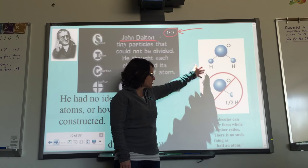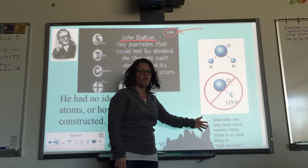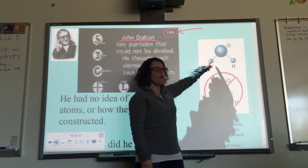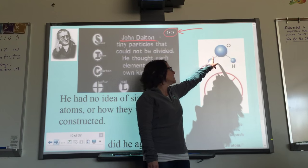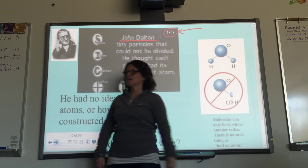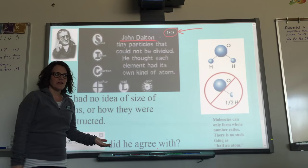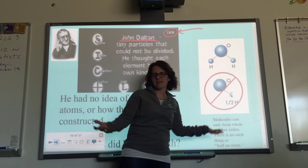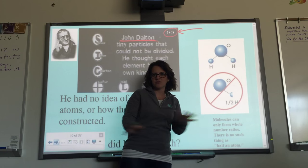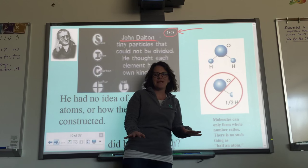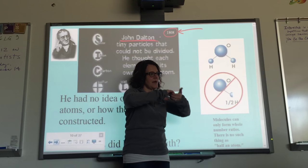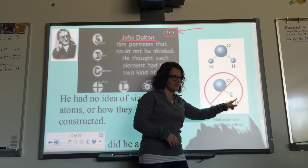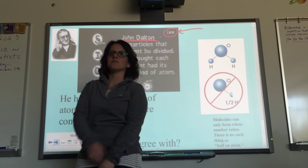Molecules can form in whole number ratios, meaning you have to have a whole atom of hydrogen and a whole atom of oxygen — not a half of an atom. Elements cannot exist in half form. Basically he's saying that elements can combine to form a molecule like water, but you can't have half an atom.